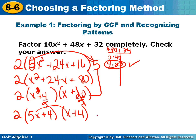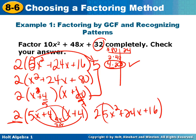You should try to check your answer. I'm going to do 5 times x is 5x squared. The inside is 4x. The outside is 20x. That adds up to 24x. And 4 times 4 is 16. Now I'm supposed to end with a 32. That's because this 2 right here needs to distribute all the way through, and I do end up with the same problem that I started with.